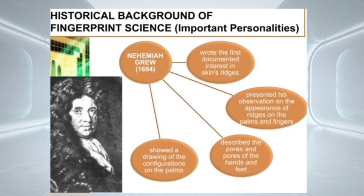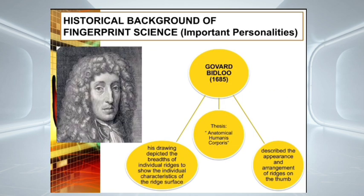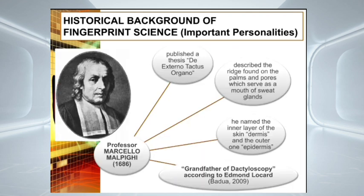Next is Govard Bidlo in 1685. He made a thesis entitled Anatomical Humanis Corporis, which described the appearance and arrangement of ridges on the thumb. His drawing depicted the breadth of individual ridges to show the individual characteristics of the ridge surface.